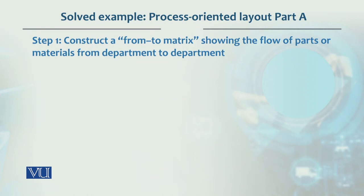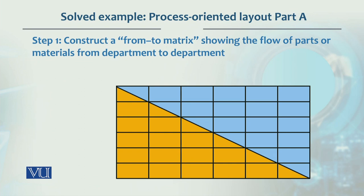Step one is to construct a from-to diagram capturing material flow and people flow between different departments. We construct this as a 6 by 6 matrix. The six departments are labeled 1 through 6 on both axes.